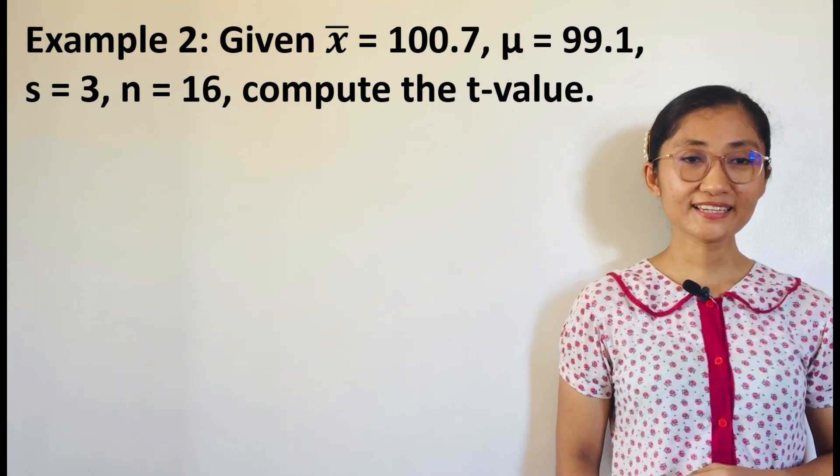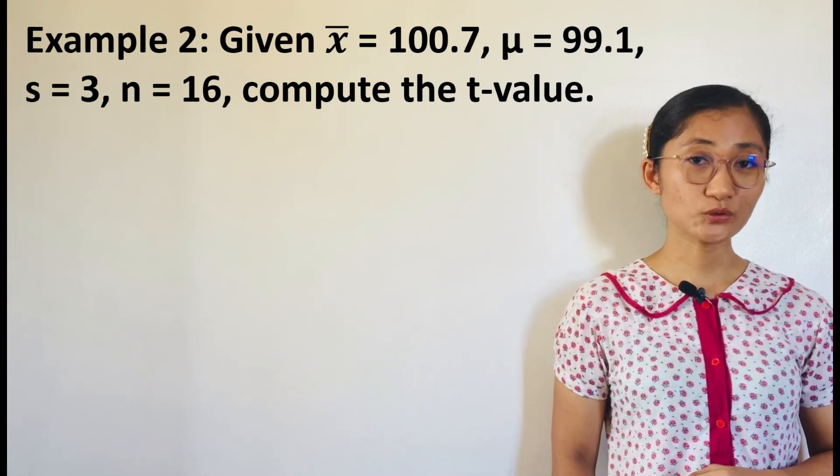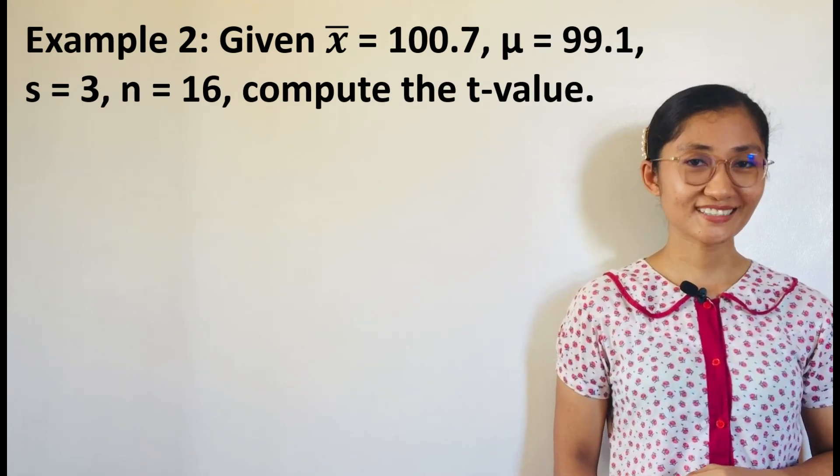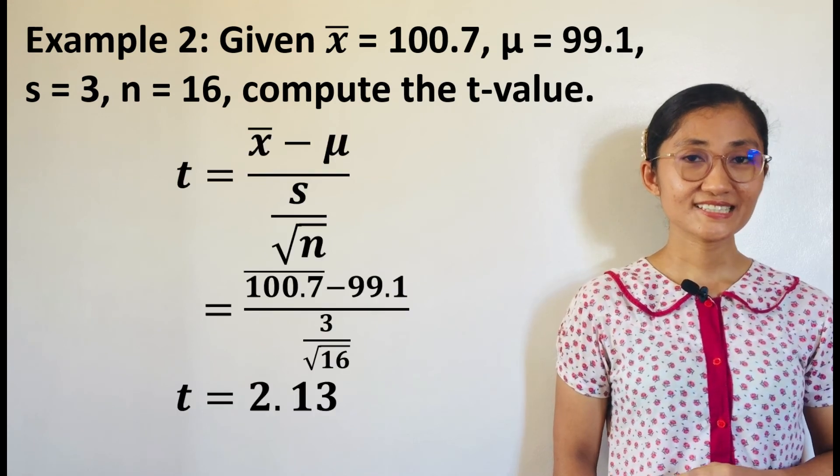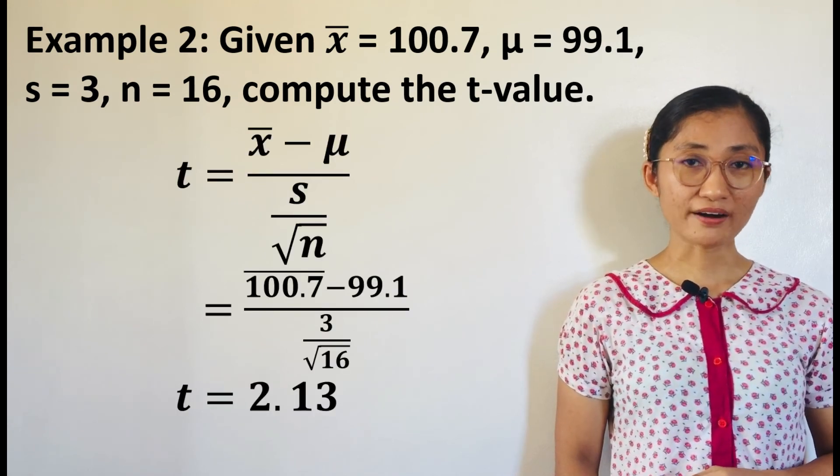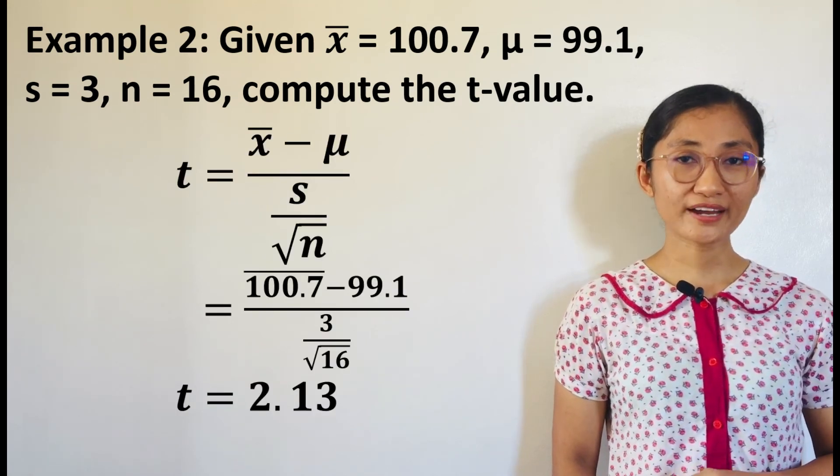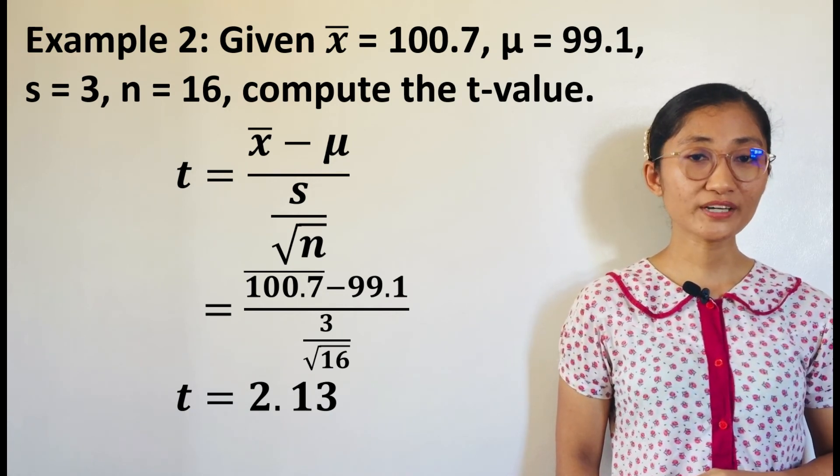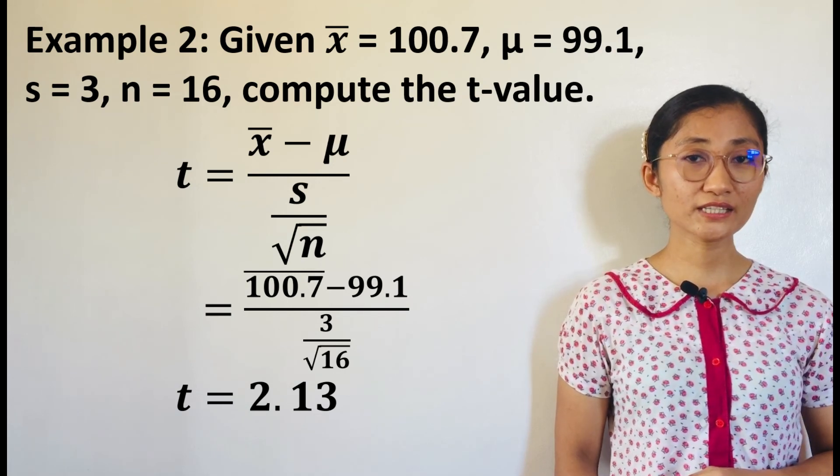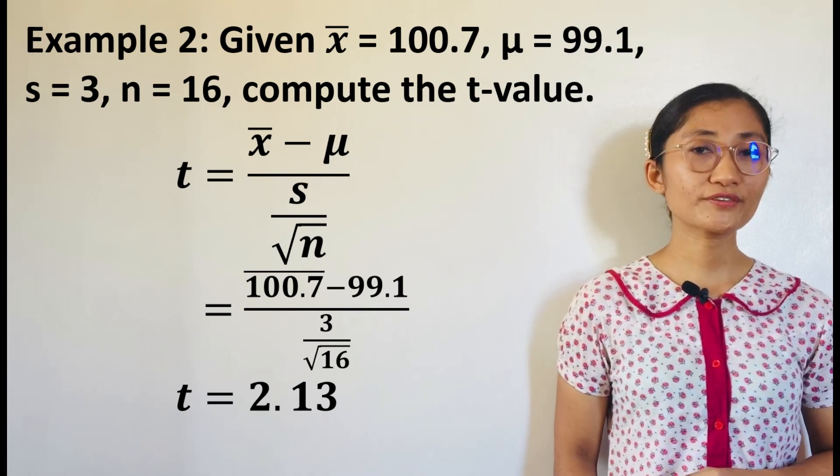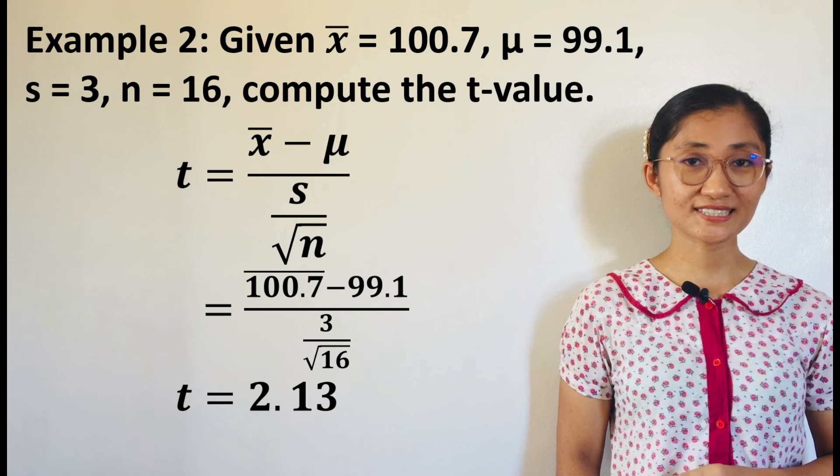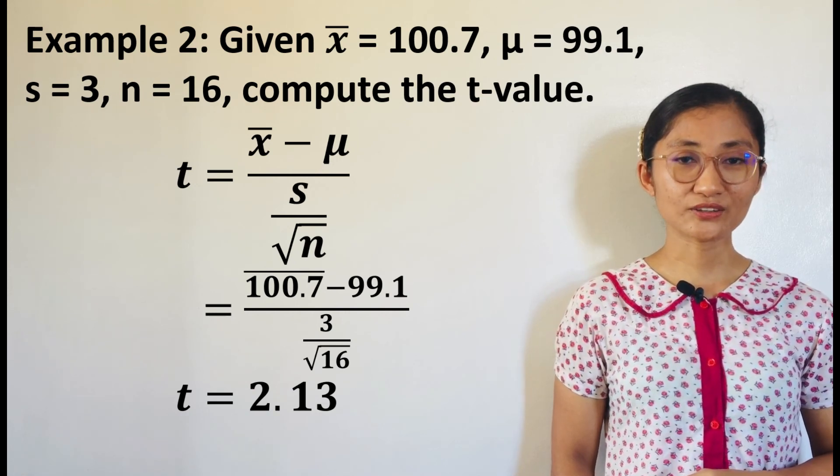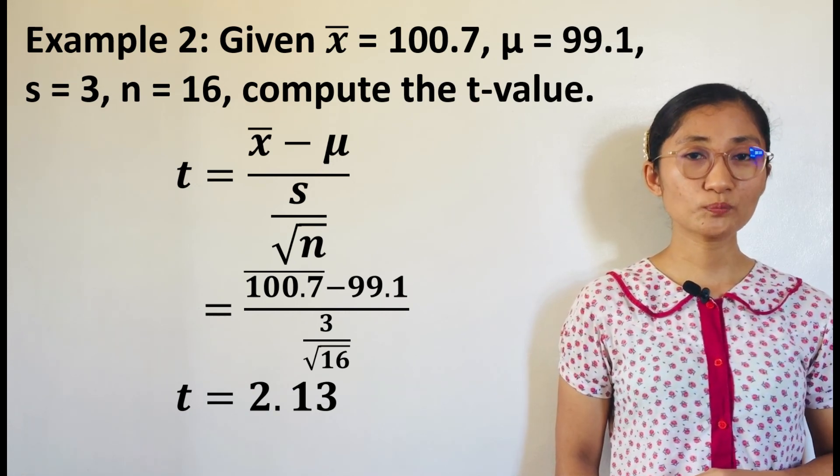Since n is less than 30 and sigma is unknown, then we will use T-test. That is, T equals X-bar minus mu over s over square root of n. By substitution, we have 100.7 minus 99.1 over 3 over square root of 16. Now, using your calculator, T is 2.13.